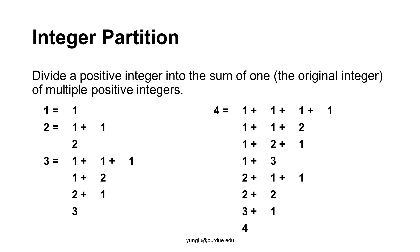For example, 2 can be broken into 1 plus 1 or 2 itself. Number 3 can be divided into 1 plus 1 plus 1, or 1 plus 2, or 2 plus 1, or 3 itself. 4 can be divided into 1 plus 1 plus 1 plus 1, or 1 plus 1 plus 2, or 1 plus 2 plus 1, or 1 plus 3, or 2 plus 1 plus 1, or 2 plus 2, or 3 plus 1, or 4 itself.